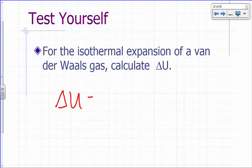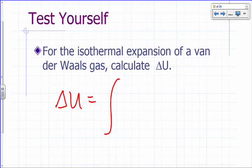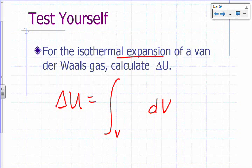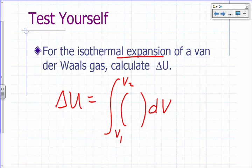Delta U would be the integral of dV from V1 to V2. Your partial derivative here would be the partial derivative of U with respect to volume, since you're changing the volume — isothermal, the temperature is constant.